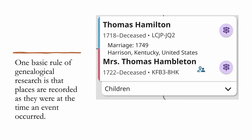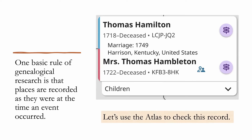Here's an example from FamilySearch — this is a direct screenshot, not doctored. Thomas Hamilton married Mrs. Thomas Hamilton. He was born in 1718 and married in 1749 in Harrison County, Kentucky, United States. Let's use the Atlas of Historical County Boundaries to check this record, starting with that marriage date.